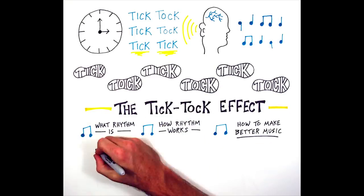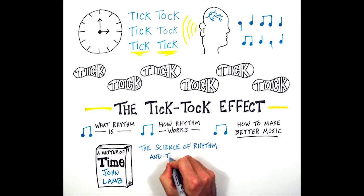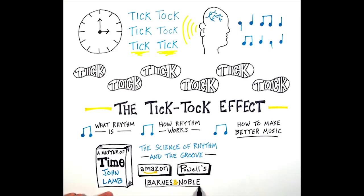Read more about the tick-tock effect and the new science of rhythm in John Lamb's new book, A Matter of Time, The Science of Rhythm and the Groove. Pick up your own copy at Amazon, Powell's, or Barnes & Noble.